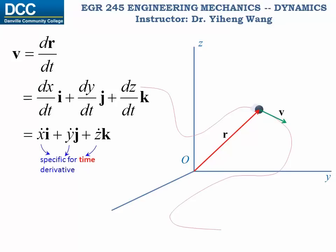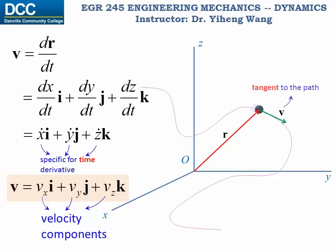And also we can write the velocity vector in velocity components, where here vx, vy, and vz represent the velocity of the particle in the x, y, and z directions respectively. And once again, the velocity vector is always tangent to the path at any point.